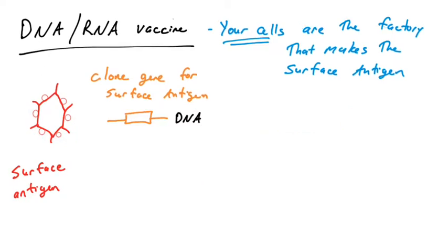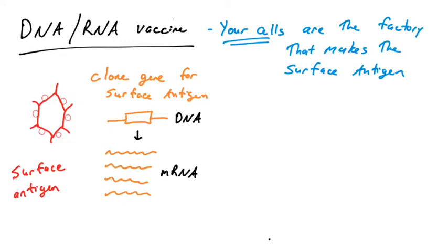Now let's talk about RNA vaccines, which are very similar to DNA vaccines but have some advantages. We identify some surface antigen we'd like to make an immune response to and clone the gene for that antigen. But instead of working with the DNA, that DNA can be transcribed in the laboratory quite easily to generate mRNA that would translate into that protein.